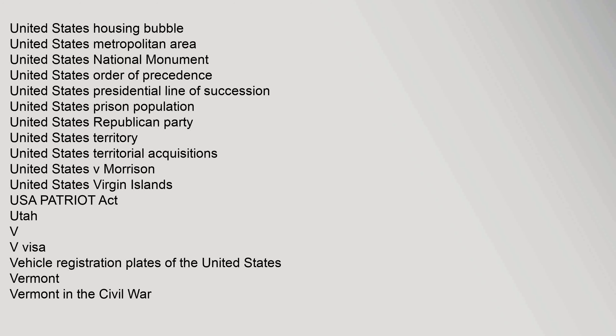V: V Visa, Vehicle Registration Plates of the United States, Vermont, Vermont in the Civil War, Vice President of the United States, Vietnamese American, Virginia, Visa Policy of the United States, Visa Requirements for United States Citizens, Visual Arts of the United States, Voice of America. W: Wall Street, Wall Street Crash of 1929, War on Drugs, War Crimes Committed by the United States.